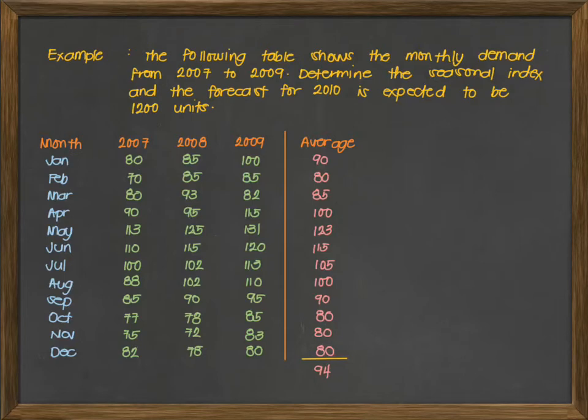Next step, once we are done with the second step, we are to compute for the seasonal index. Again, seasonal index is computed using the formula of your historical average divided by the overall average. In this case, we have 90 divided by 94, which gives us 0.957. Now usually, we use three decimal places when we are writing our seasonal index.